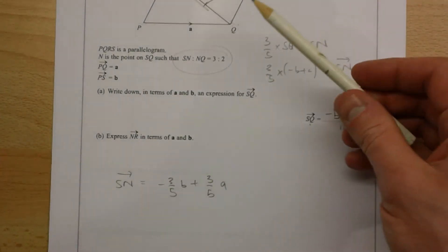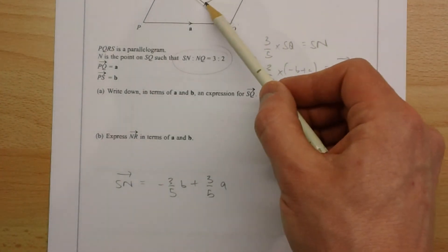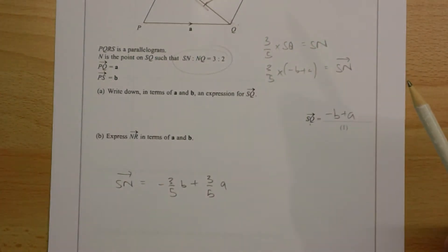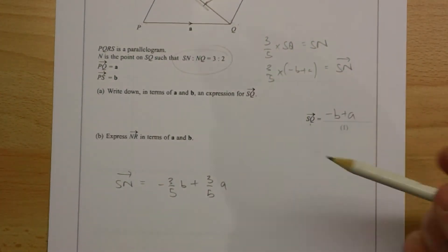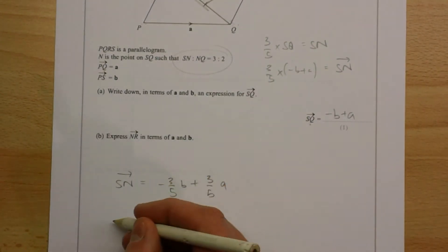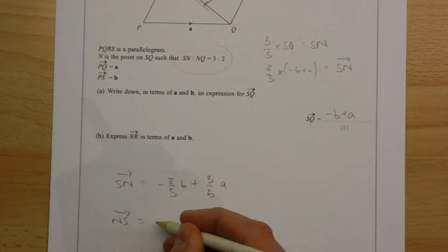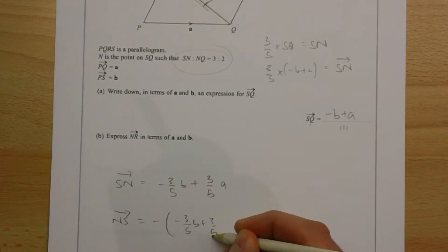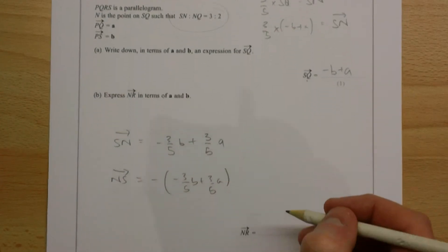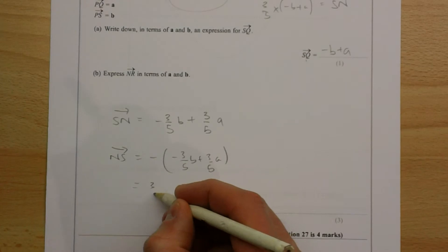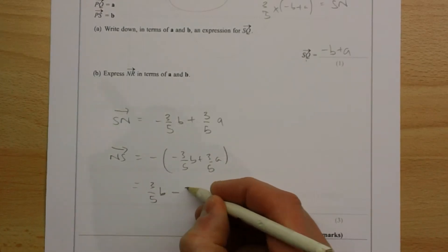But to get the vector from N to R, we need to go backwards down this vector here, so we need to reverse the direction from S to N.